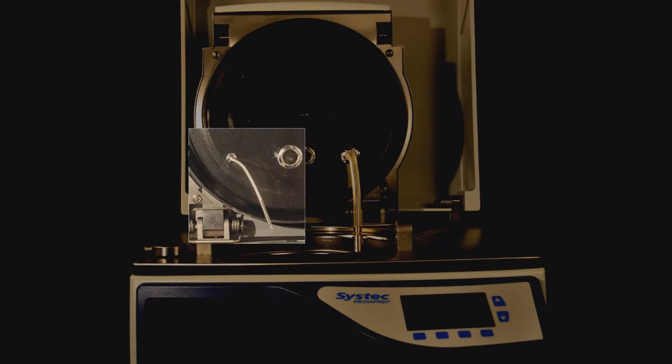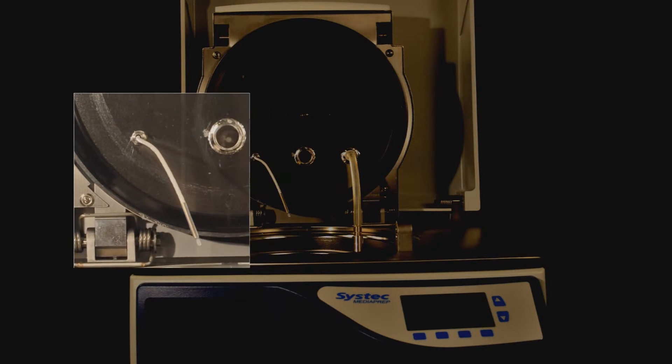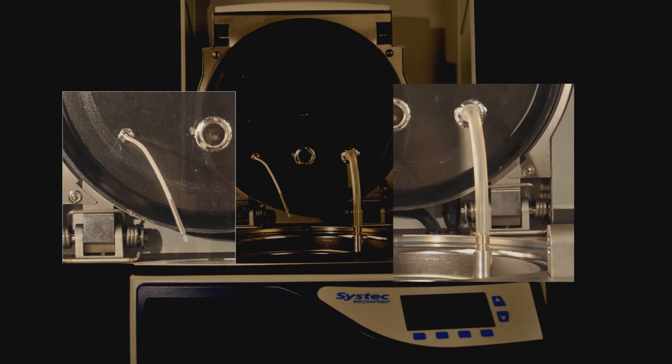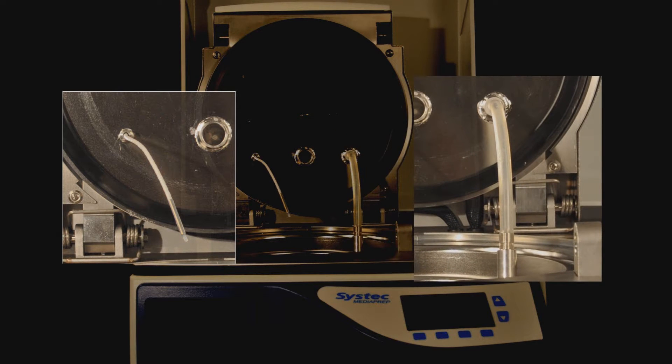A flexible temperature probe directly measures the temperature of the liquid throughout the entire cycle. The dispensing tube allows the media to be dispensed either using a peristaltic pump or by pressurizing the sterilization vessel.